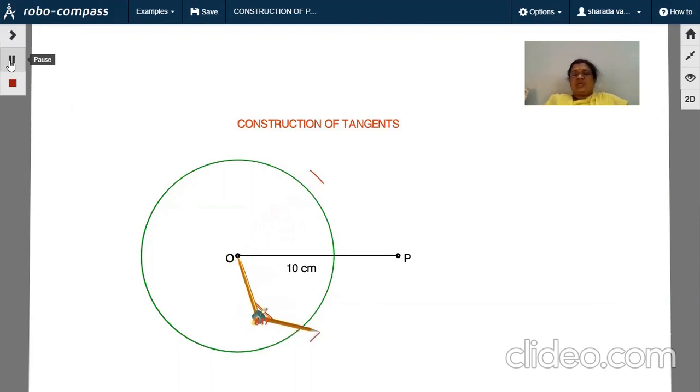You can take approximately 7 centimeters radius and draw arcs up and down. You have to put the point of intersection of these arcs as X and Y.